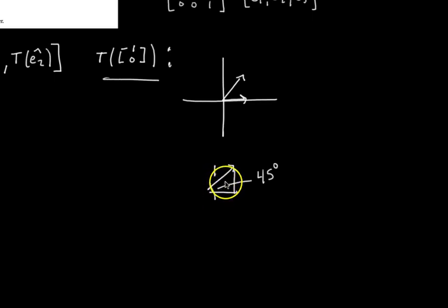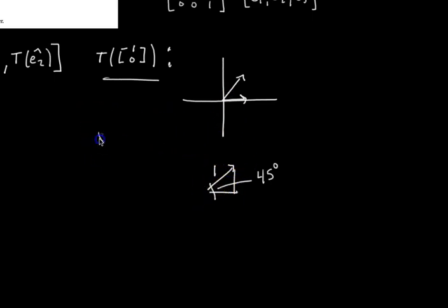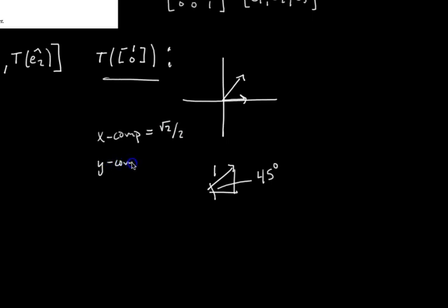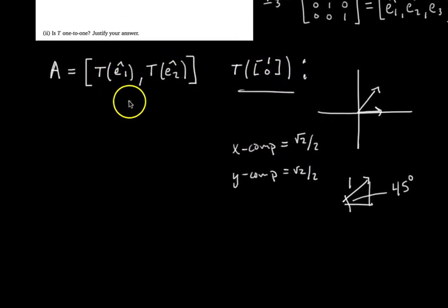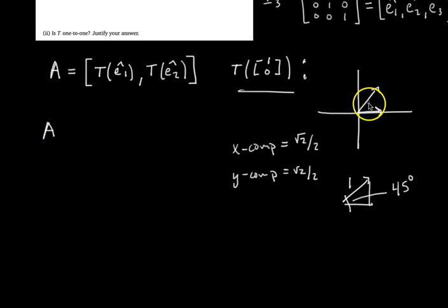So T(e1) is the vector [root 2 over 2, root 2 over 2]. This becomes the first column of our standard matrix A. So the first column of A is root 2 over 2, root 2 over 2.